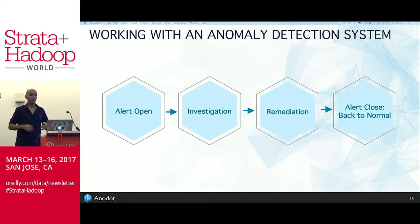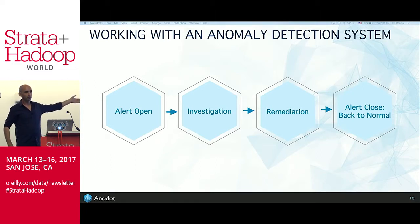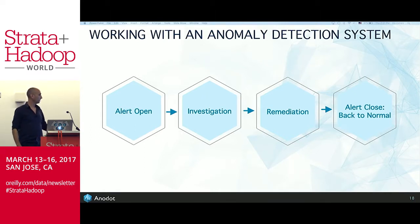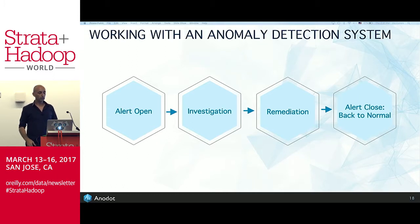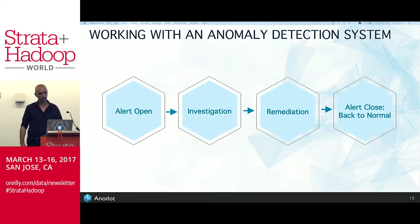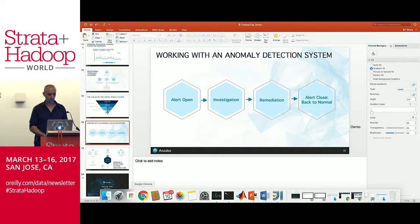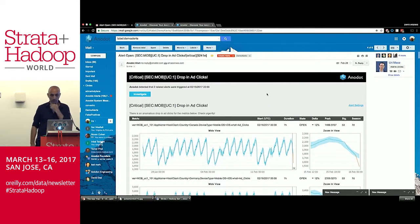How do people work with an anomaly detection system? Once you send data into the system, you want to get notified. The most typical way people consume anomalies is by getting alerted when something happens — they don't want to sit in front of a monitor all day. They want alerts to come to their phones. Once you get that alert, you start investigating, apply a remediation, and then expect a close event showing everything went back to normal. Let me show a short demo of how this looks in our system.